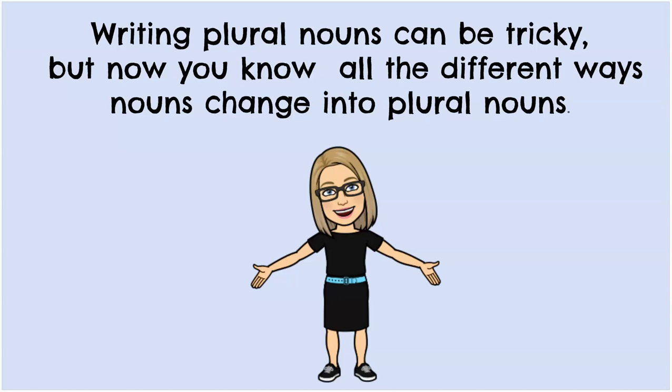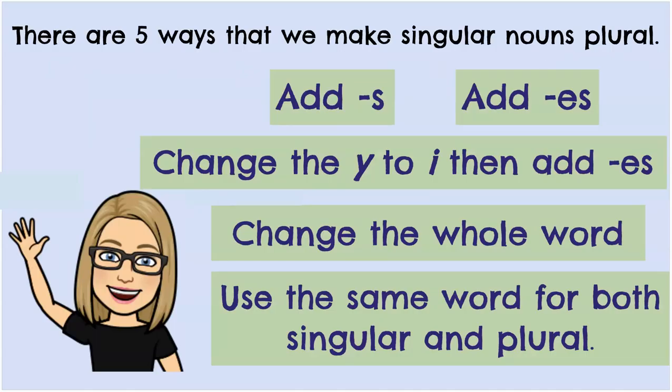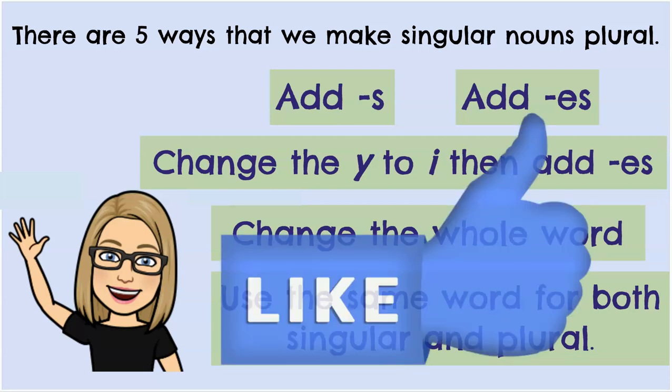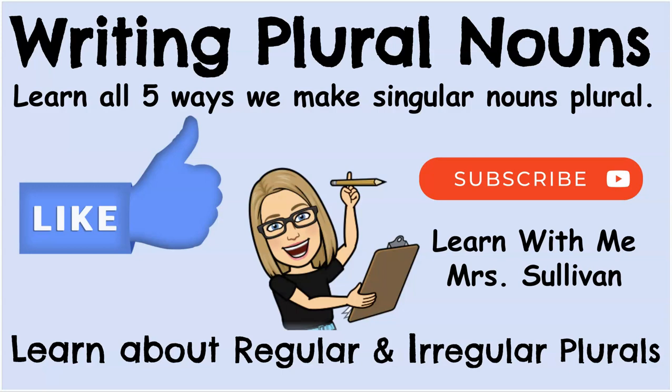Writing plural nouns can be tricky, but now you know all the different ways nouns change into plural nouns. There are five ways that we make singular nouns plural: add S, add ES, change the Y to I then add ES, change the whole word, or use the same word for both singular and plural. Five different ways to make nouns plural — cool! Please like if you enjoyed this video or learned something new, and subscribe. Thanks for watching Learn With Me, Mrs. Sullivan: Writing Plural Nouns — learning all five ways we make singular nouns plural and learning about regular and irregular plurals.